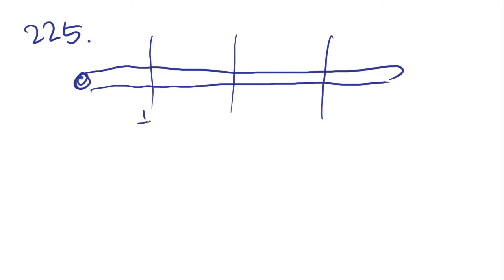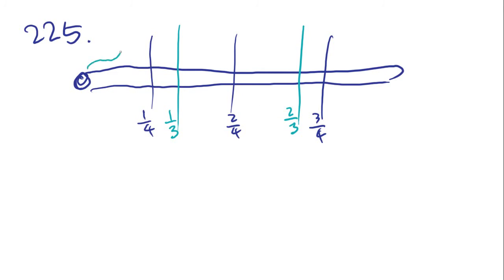Problem 225: there's a straight pipe that is 1 yard in length, marked off in fourths — cut into 4 equal parts. It's also marked at one-third and two-thirds. If the pipe is then cut into separate pieces at each of the markings, which of the following gives all the different lengths of the pieces in fractions of a yard?